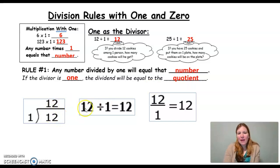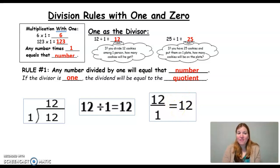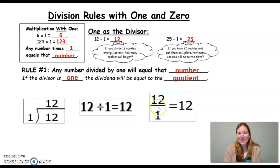Here are the three different ways we can write a division problem, and notice how I'm showing you that rule in all three ways: 12 divided by 1 equals 12 in long division, 12 divided by 1 equals 12 written horizontally, and 12 divided by 1 equals 12 as a fraction.